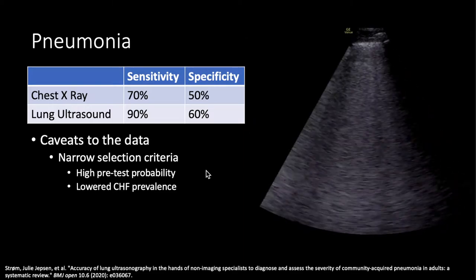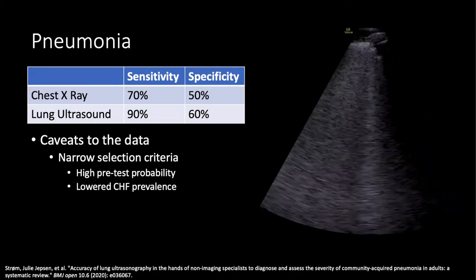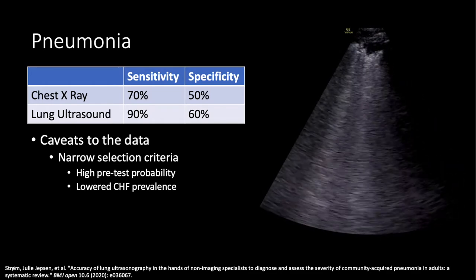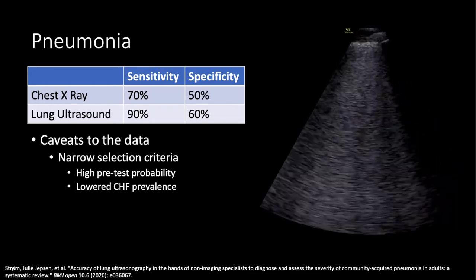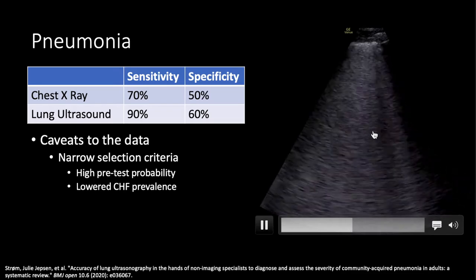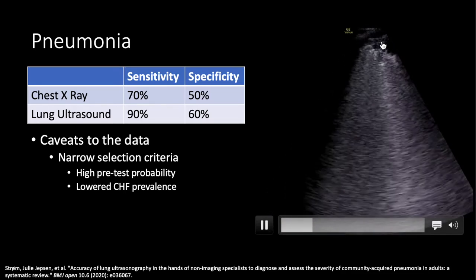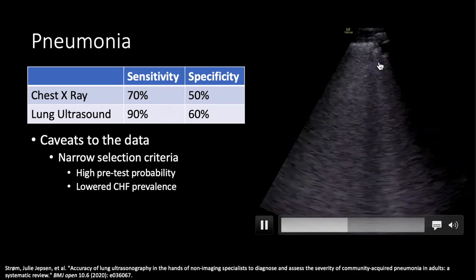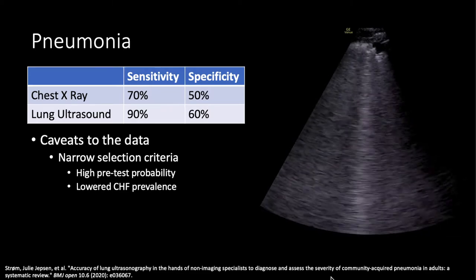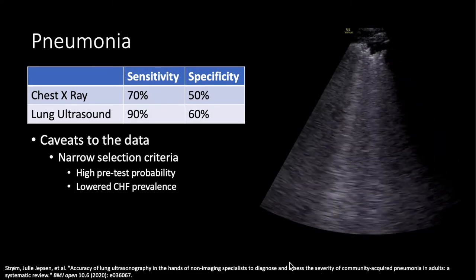Here is the ultrasound we placed on this patient. The chest x-ray wasn't obvious, but when you put the probe on the patient's left lower lung zone, you can see there are clearly several B-lines as well as what we'll call a subpleural consolidation. This is consistent with pneumonia and made the diagnosis in this case.